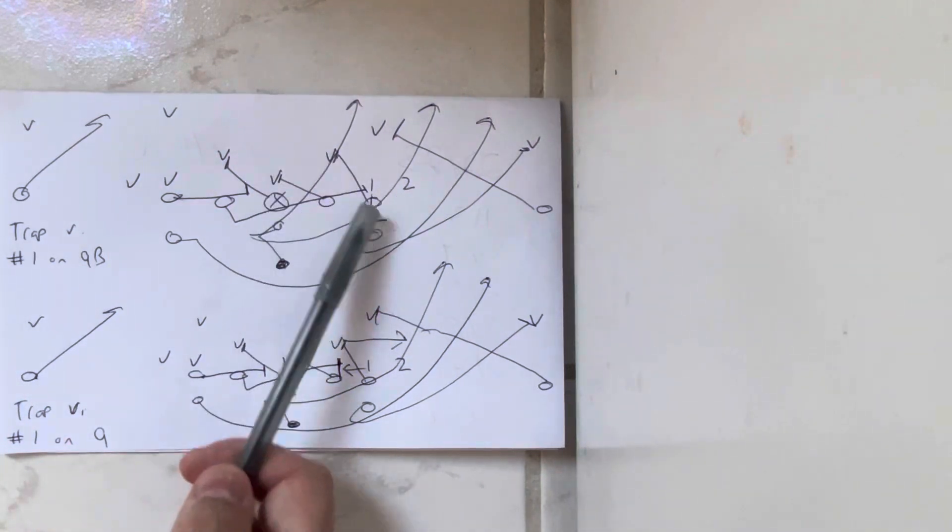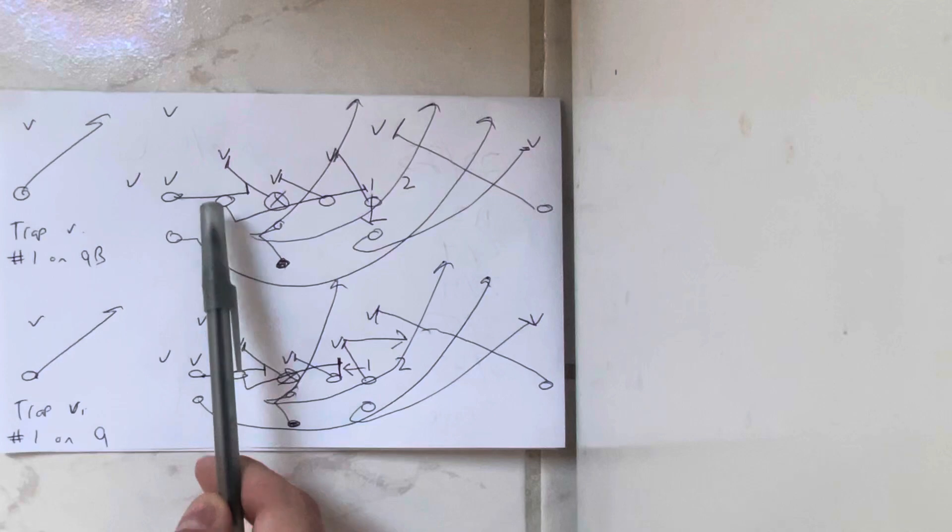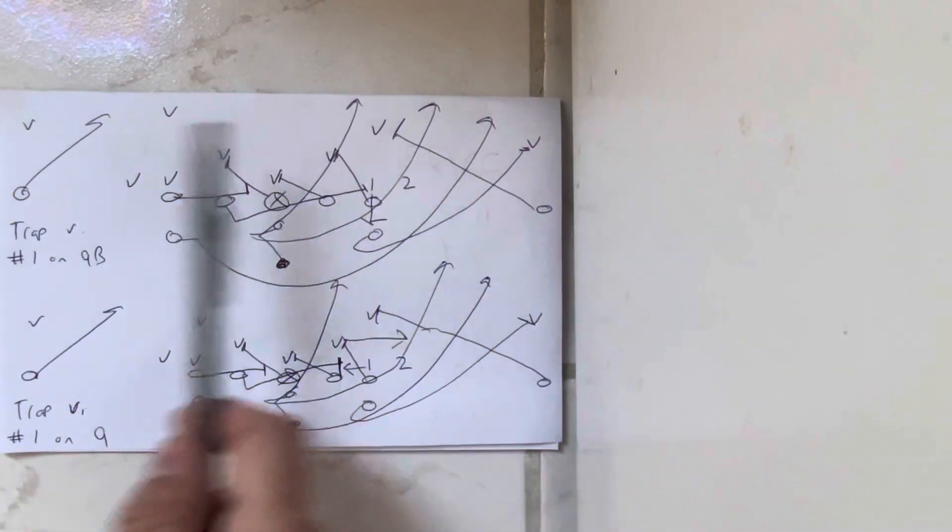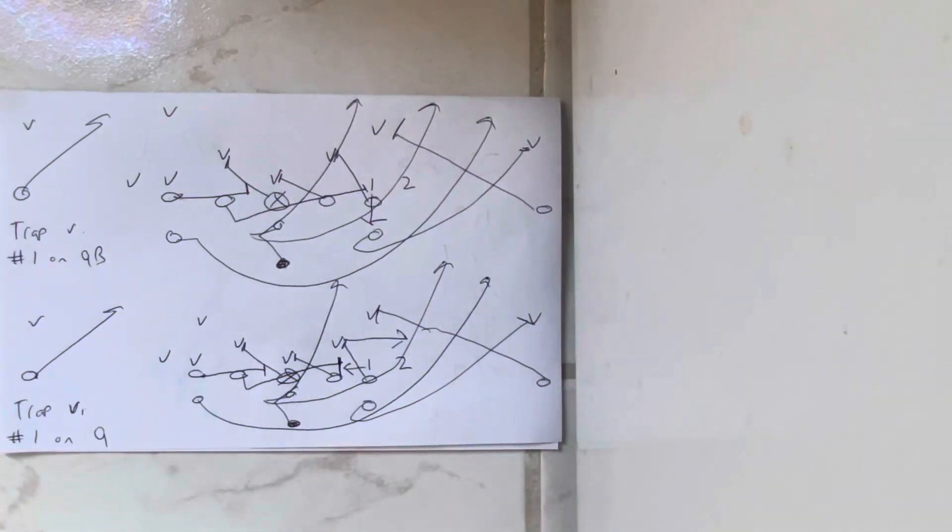So tackle blocks, he veered into the backer, guards down, centers back. You got the backside tackle scooping, the guard trapping. Then the receivers block the safeties, the A twirls, and there's a playside safety blocks the run support.